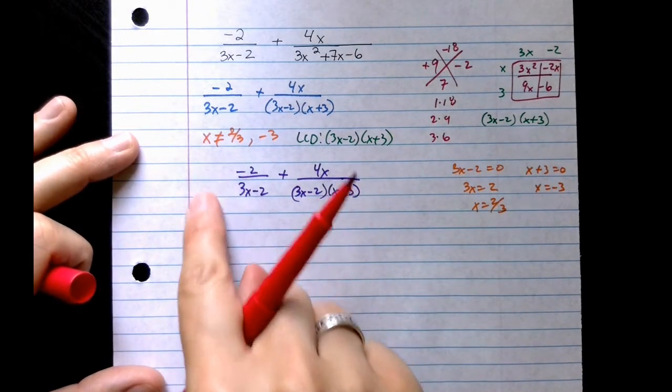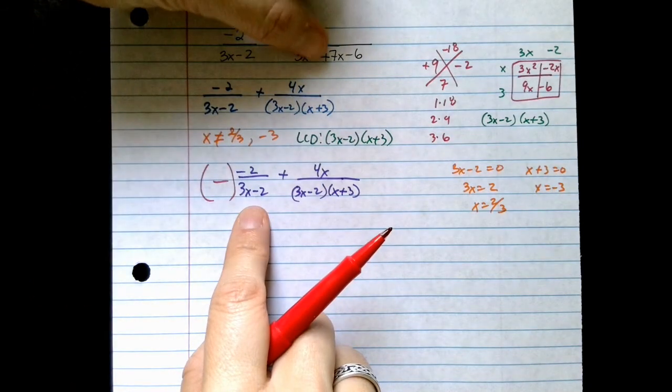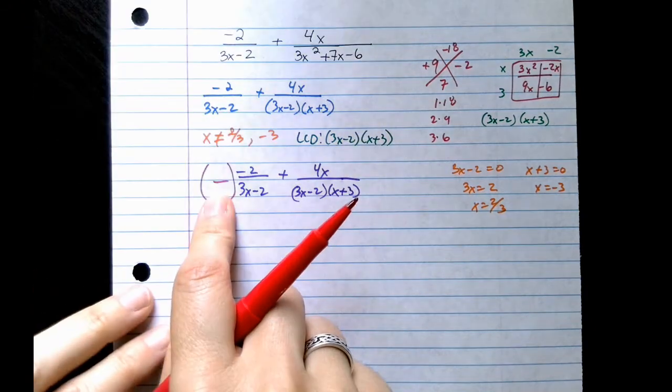So all I have to do is change the first fraction. It already has a 3x minus 2, so all I have to do is multiply by an x plus 3 here to make it match with the common denominator.